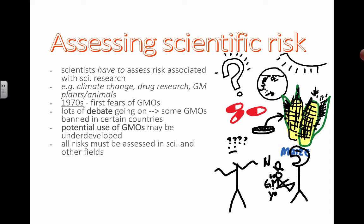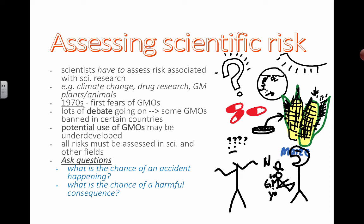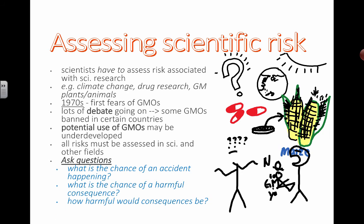So we have to look at pros and cons of everything. All risks must be assessed in science and in other fields. Questions you should be asking yourself: What is the chance of an accident happening? What is the chance of a harmful accident happening? What are the chances of consequences that we would never want to face actually happening? How harmful would these consequences be?